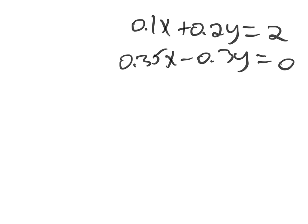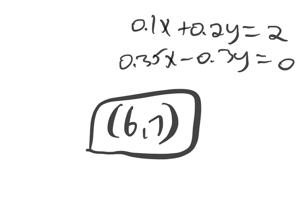So if we just graph the system of equations here in decimals, we can see that the lines are going to intersect at the point (6, 7). So that means (6, 7) is on both lines and therefore is a solution to the system.